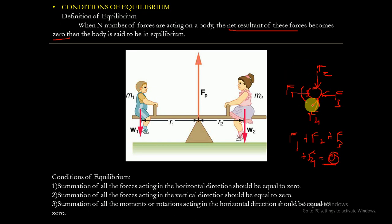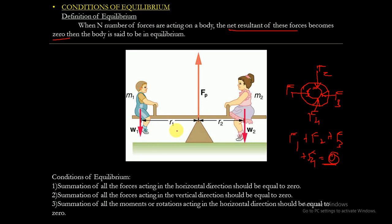For example, suppose two children are playing on a seesaw. The weight of one child is W1 and another is W2. For the seesaw to be in equilibrium, W1 plus W2 must be equal to the reaction FP developed. Then the seesaw will be in a horizontal position and in equilibrium, with clockwise and anticlockwise moments cancelling each other.